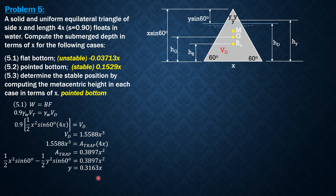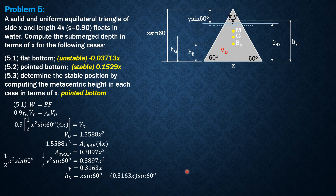Having found y = 0.3163x, we can now compute the submerged depth hd. The submerged depth for the flat bottom position equals x sin60° minus y sin60° = x sin60° minus 0.3163x sin60°, so hd = 0.5921x.